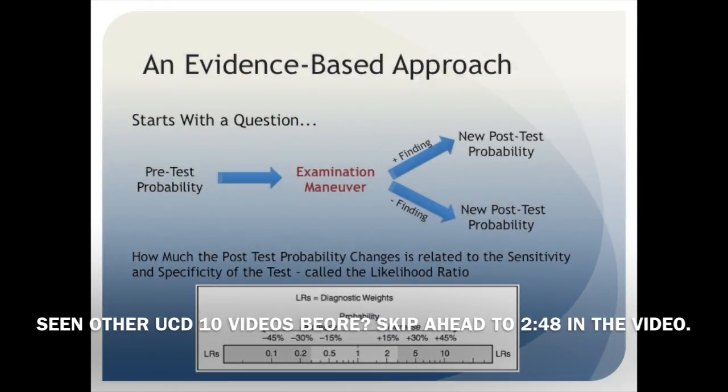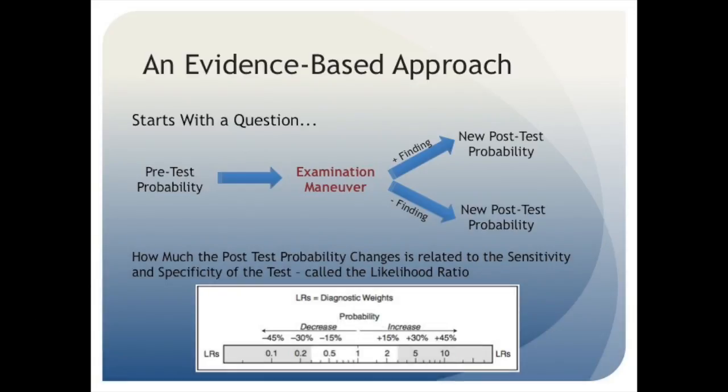An evidence-based approach to the physical exam begins with a diagnostic question — for example, does this person have chronic anemia? To answer the question, you first estimate a pre-test probability, which is essentially your best guess as to how likely you think this patient is to have the pathology in question, based on aspects of their history, presenting symptoms, etc. It's generally expressed as a percentage. Using this as your starting point, you choose an evidence-based physical exam maneuver, which, depending on whether the test is positive or negative, will feed back on your original hypothesis, giving you a new post-test probability, as demonstrated in this figure.